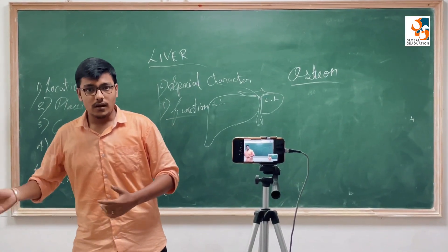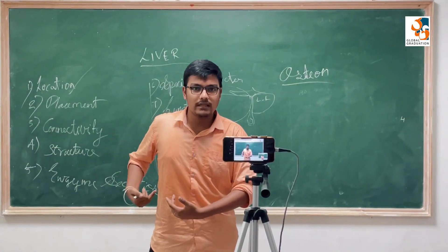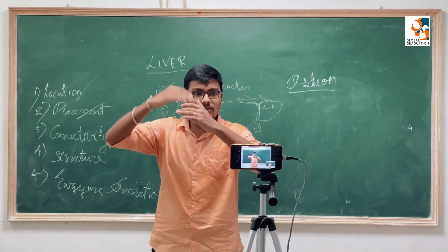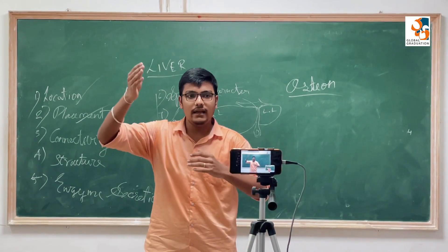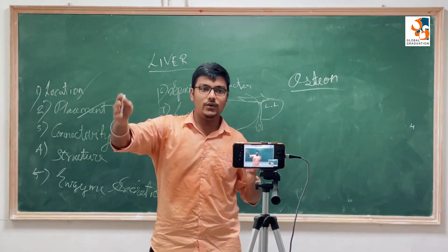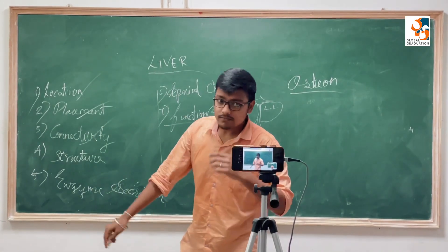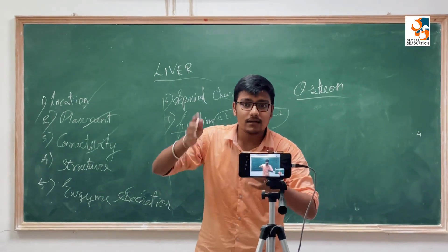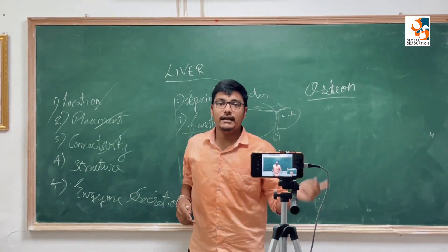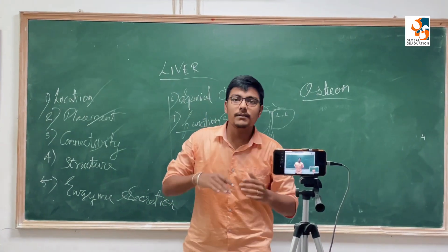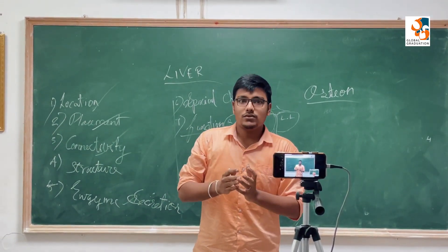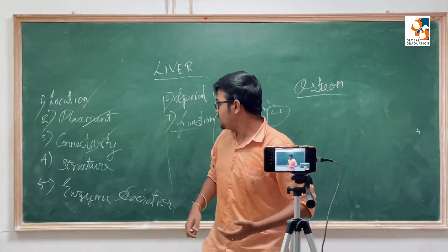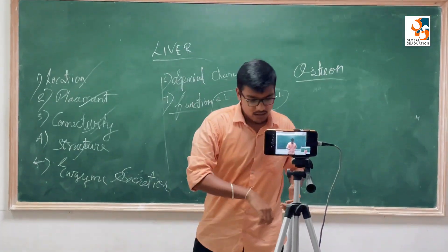Our organ is located in the upper right of our abdominal cavity. Number two, the placement: this organ is placed below the diaphragm, above the pancreas, beside the stomach, and across the duodenum. Number three, the connectivity: this organ is attached to the diaphragm by a ligament called the falciform ligament, and it is also connected with a type of tissue called Glisson's capsule.